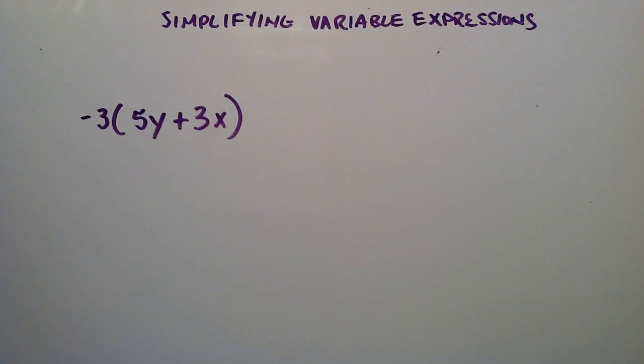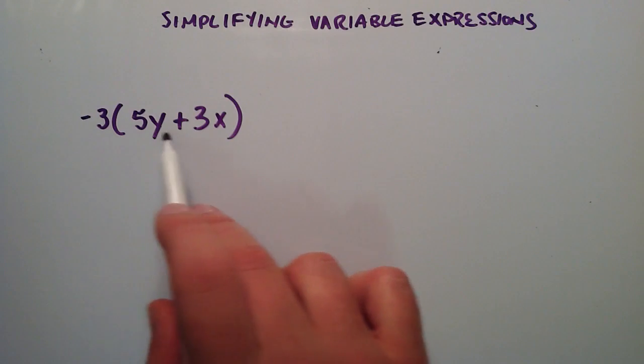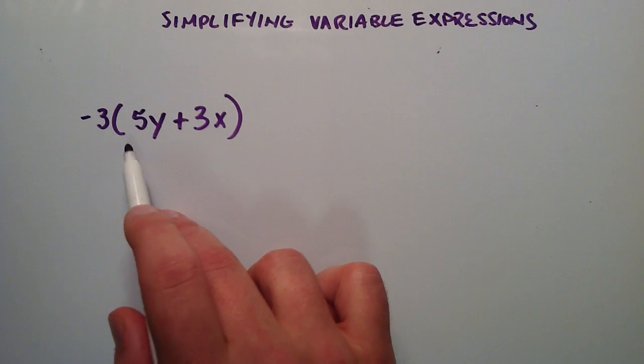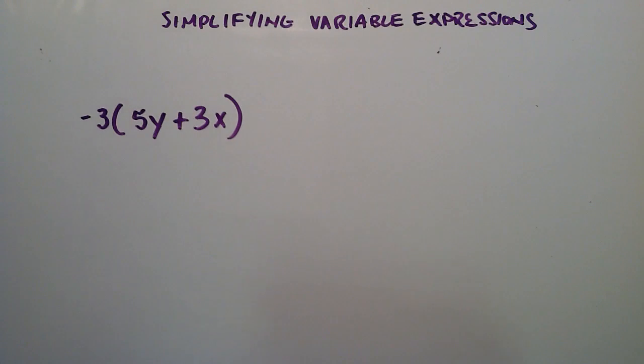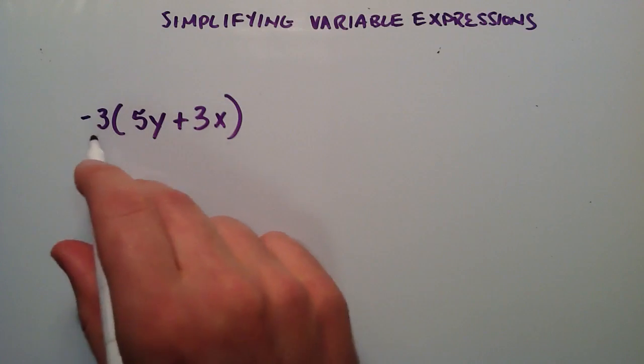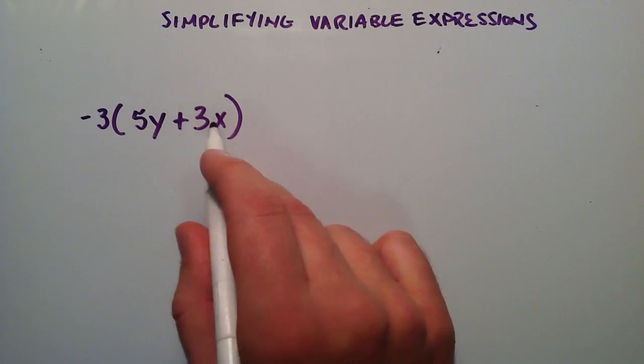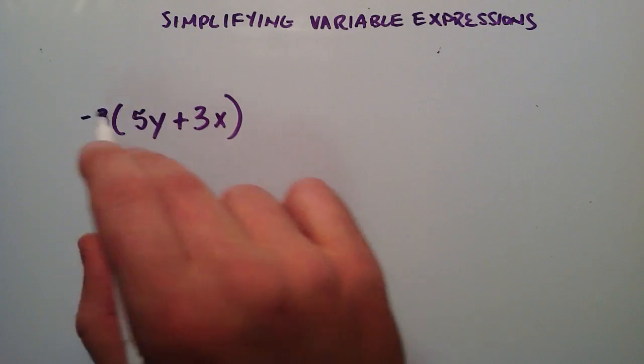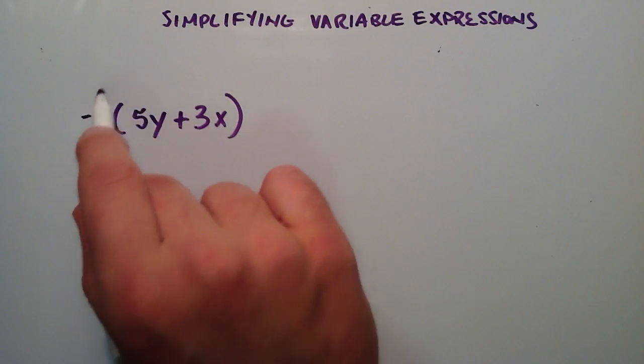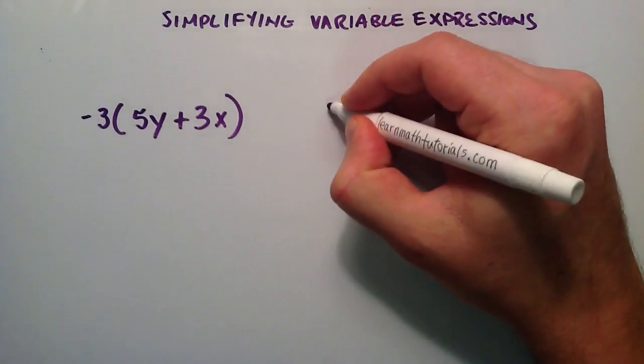And so this first one that we're going to do, we can simplify this by using the distributive property. So the distributive property, remember, tells us that if we have some number A multiplied by B plus C in parentheses, then we can simply distribute that into the terms. So let me go ahead and write out what I just said.